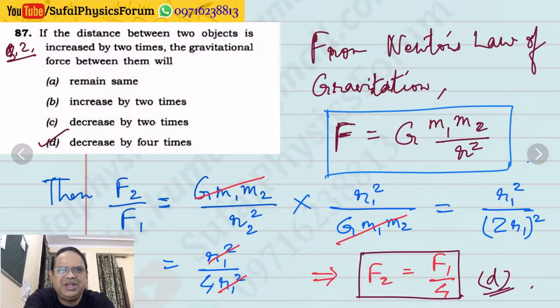Question number 2. This question is talking about gravitational force. If the distance between two point masses is increased by 2 times, then what will be the effect on the gravitational force between them? Let's see.